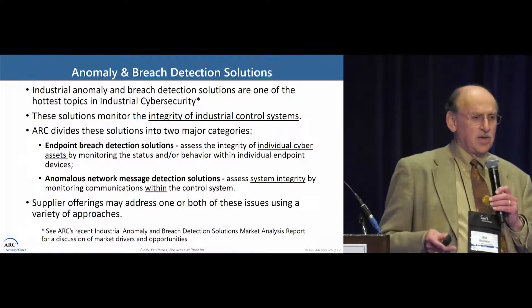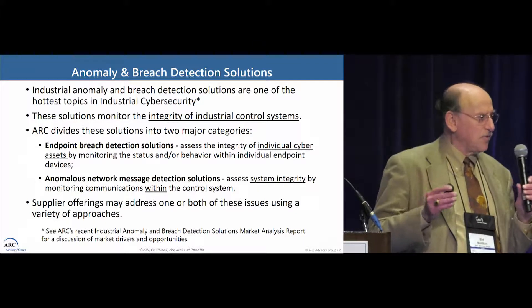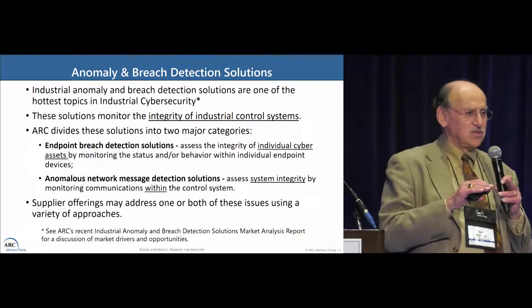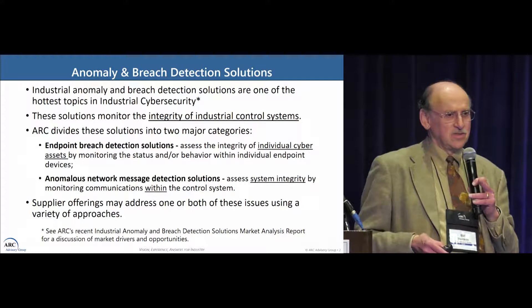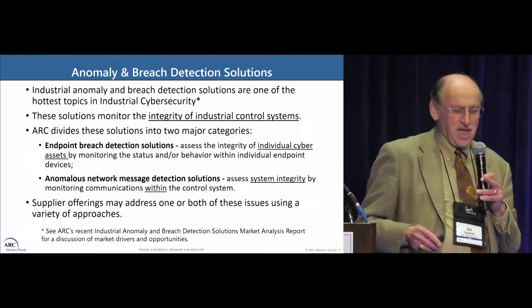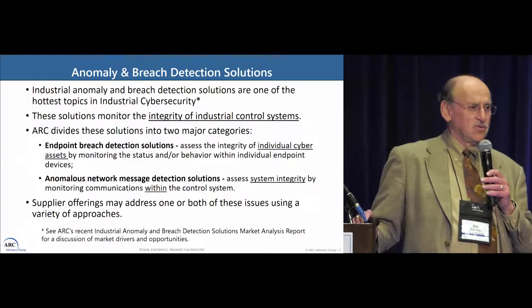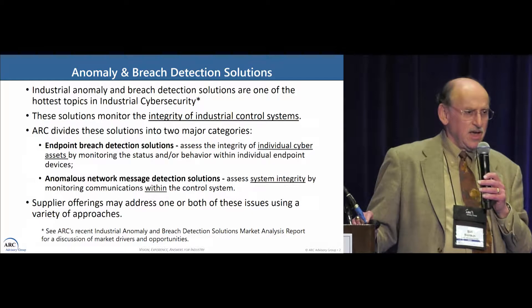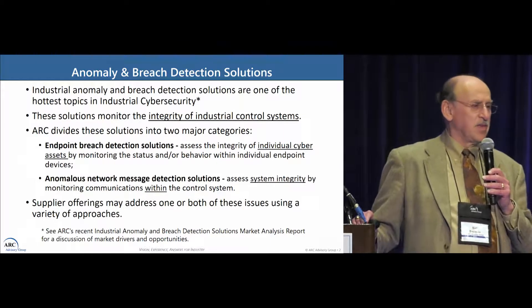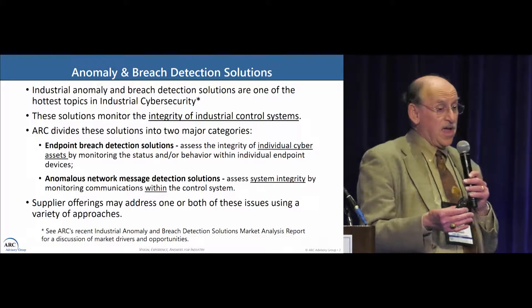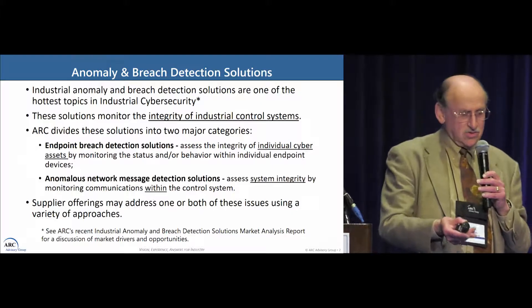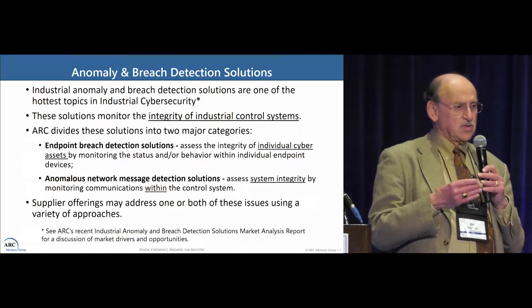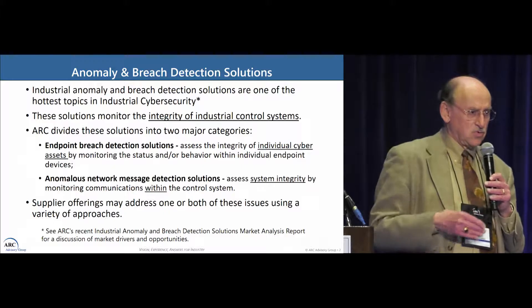Within ARC I use the term 'anomaly and breach detection,' and this is just my own definition. As an analyst my job is to make sense of the products I see and group them into categories. For my purposes, 'breach detection solutions' are solutions that look for anomalous behavior within an endpoint — something is not the same in this endpoint from what you expect it to be. 'Anomaly detection,' or more precisely 'anomaly network message detection,' refers to solutions that look not at the endpoint itself but at the communications happening within the control system between endpoints.